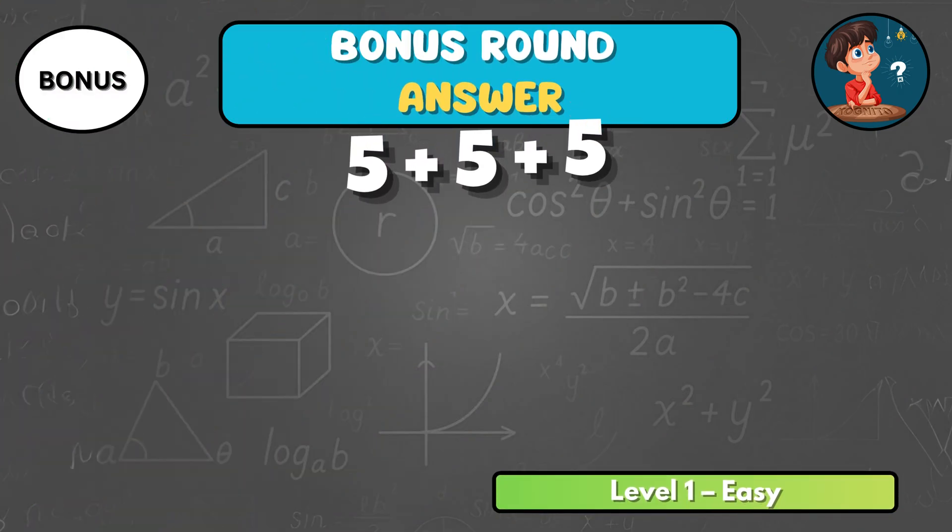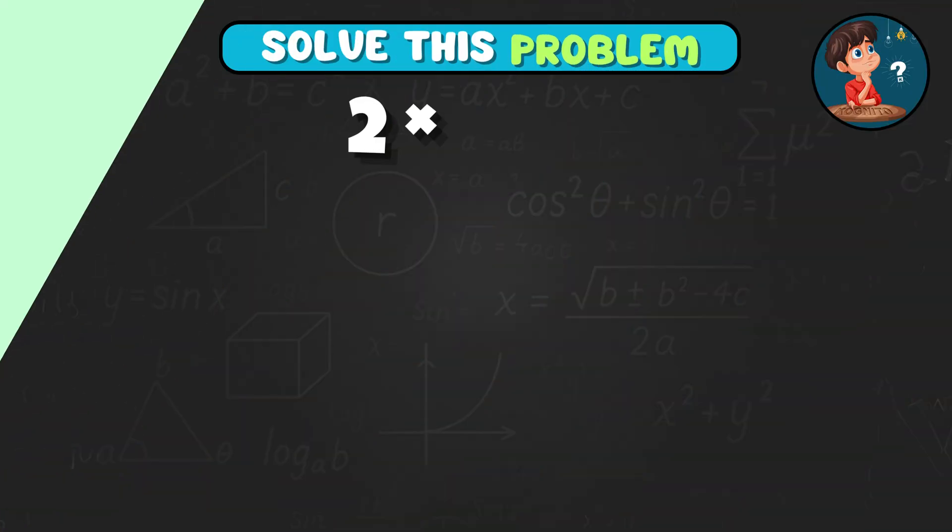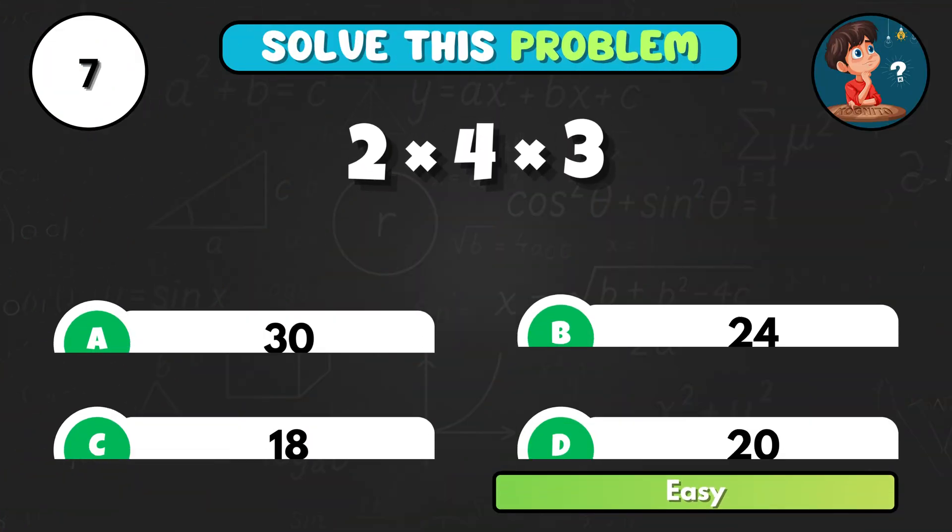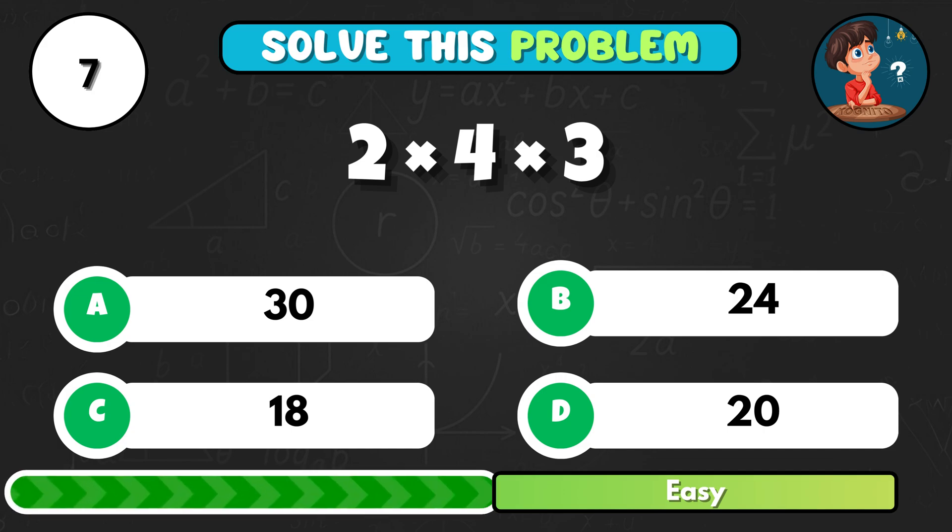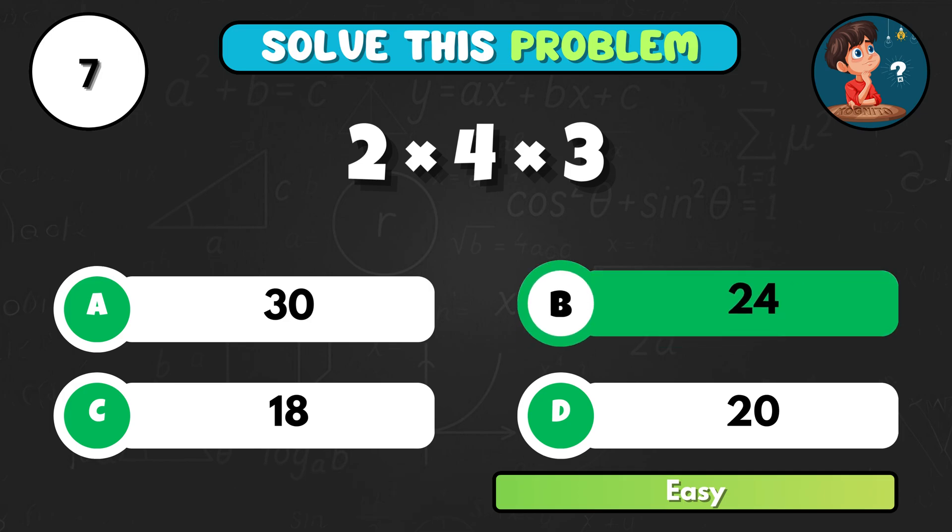Now back to the bonus round. Did you figure it out? The correct answer is 3 times 5. Did you get it right? Can you handle this one? 2 times 4 times 3. That's B, 24.